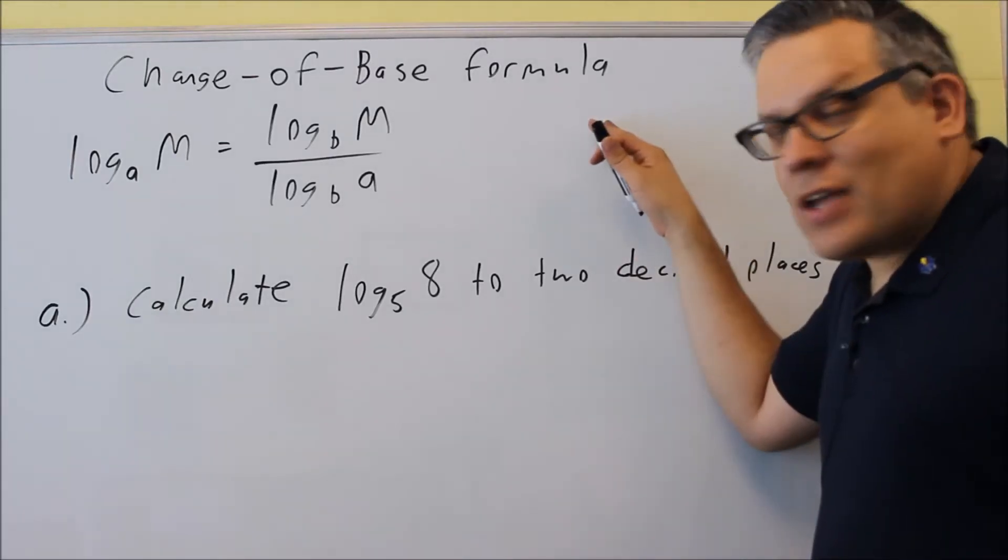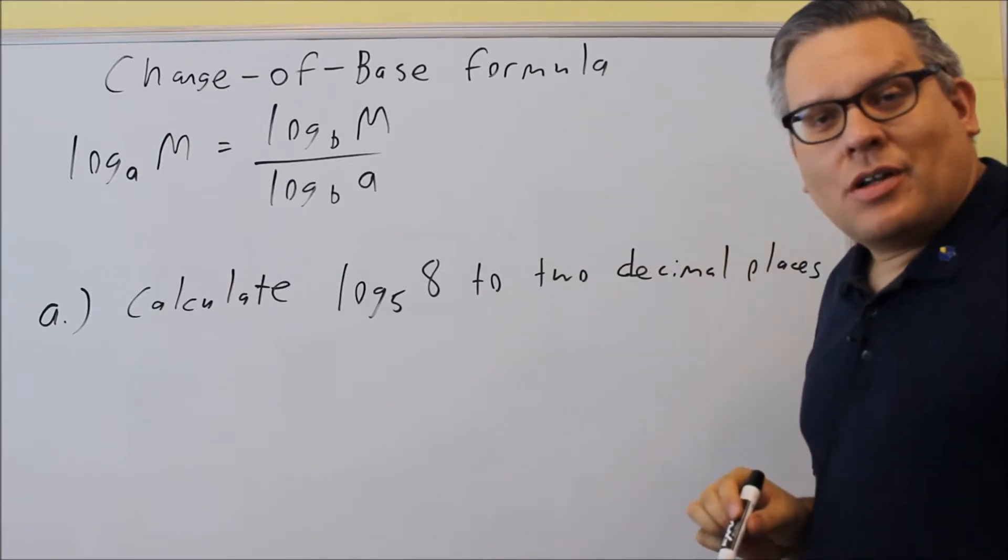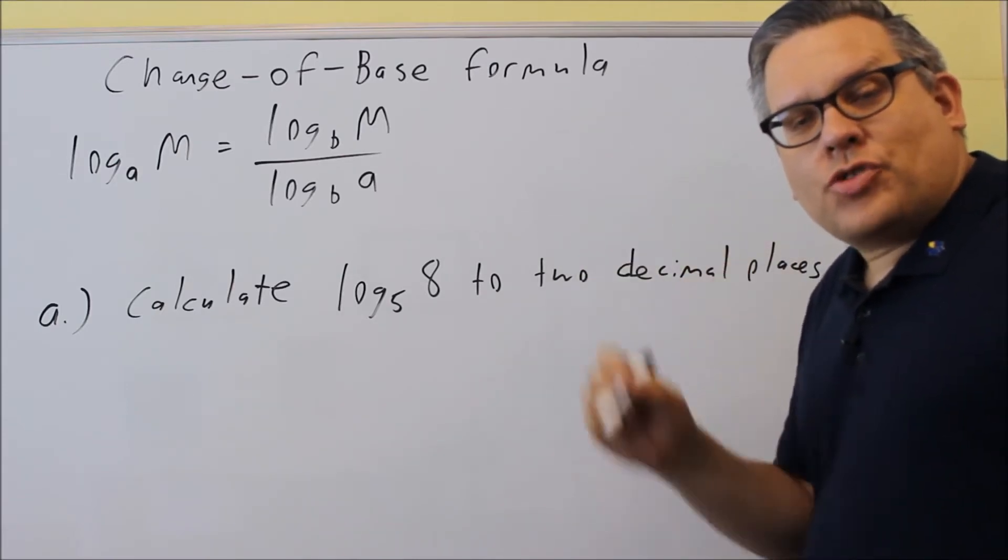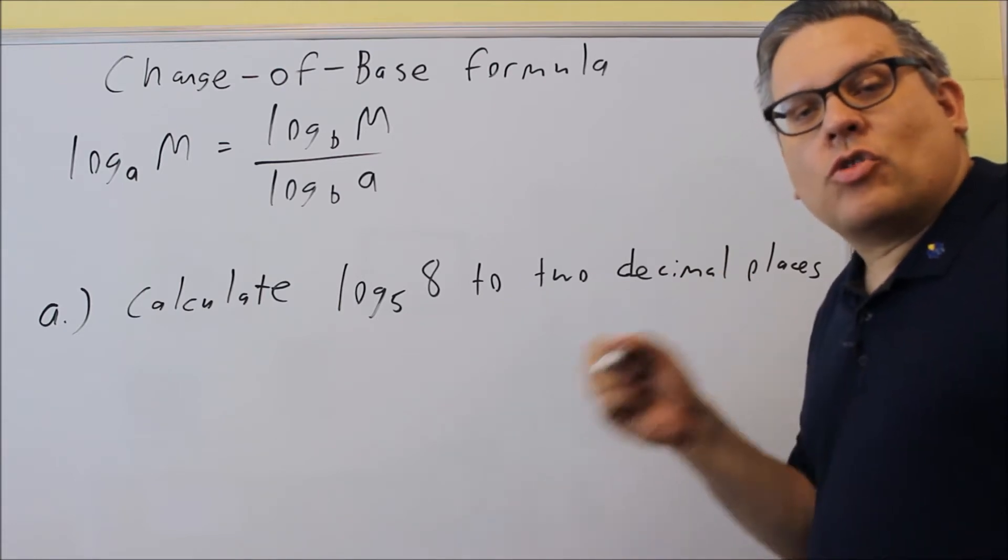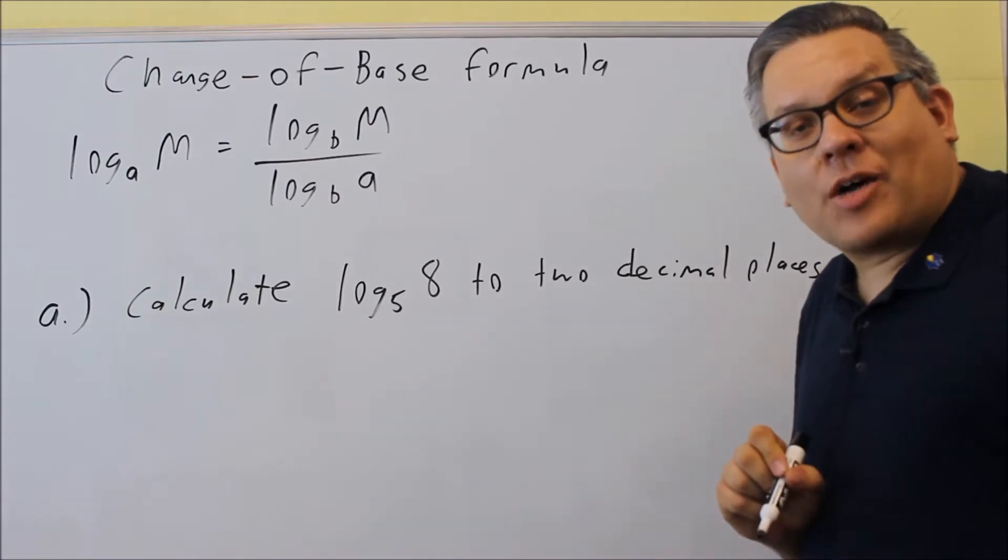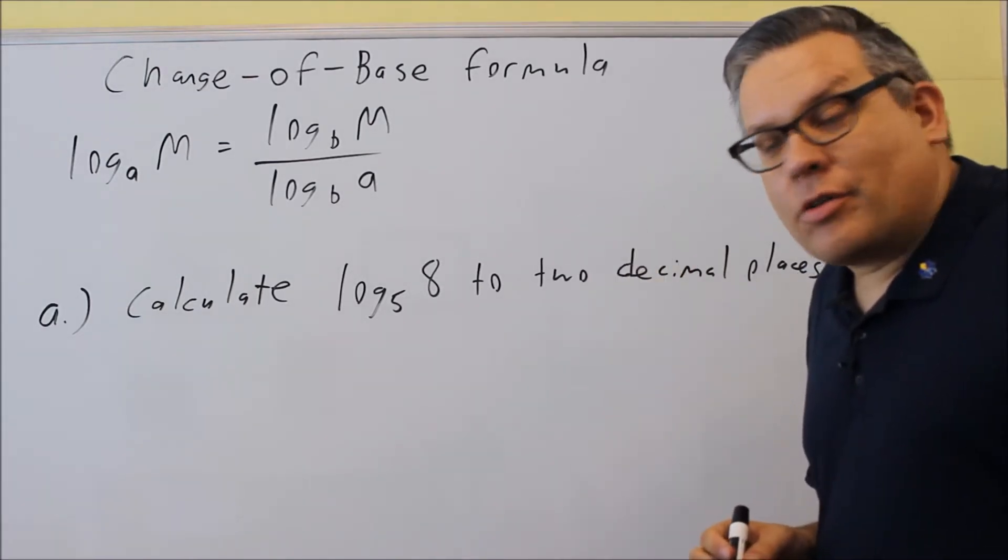The next thing we're going to talk about is the change of base formula. The change of base formula is this one here. On your calculator you can only do two different types of logs. You can do a log base 10, which is your LOG button, or you can use a log base E, which is a natural log, that's your LN button on your calculator.